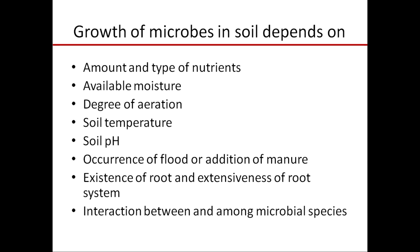Soil temperature is certainly an important limiting factor for microbes. Soil pH also affects the kind of microbes which grow — bacteria prefer neutral to alkaline soil, whereas fungi prefer acidic soil. Various types of soils have different pH values, so we can expect a range of microbes in a soil which has a typical pH.